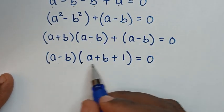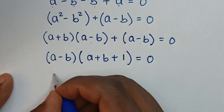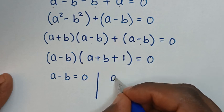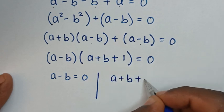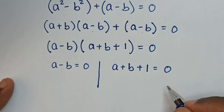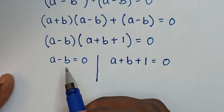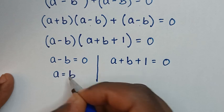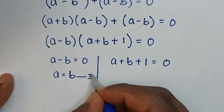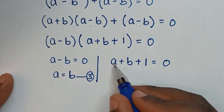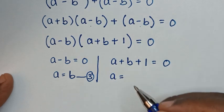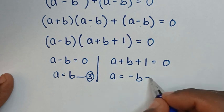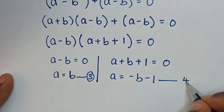From here we have two solutions: the first solution a minus b is equal to 0, and the second solution a plus b plus 1 is equal to 0. From the first solution, taking negative b to the right side gives a is equal to b — this is equation 3. From the second solution, making a the subject gives a is equal to negative b minus 1 — this is equation 4.